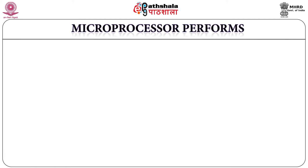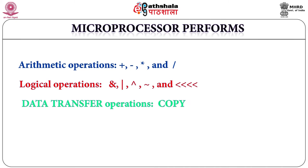A microprocessor is capable of performing arithmetic, logical and data transfer operations. It can also perform I/O operations so that input in the form of numbers or digital signals can be taken from an external device, and the output can be sent to an external device for displaying, storing or controlling purposes. It is also capable of decoding instructions and generating timing signals necessary for performing different arithmetic, logical and data transfer operations.